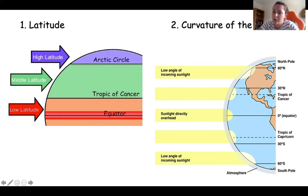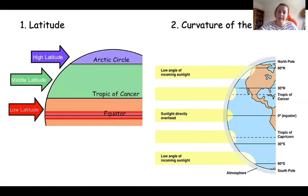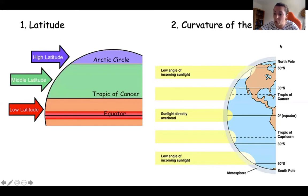Curvature of the Earth: the Earth is a sphere, so it's about how much sunlight different parts receive. At the equator, sunlight hits directly overhead all year round, making it very hot — the same applies at the tropics. At the North and South Poles, due to the tilt of the Earth, there are roughly six months of darkness and six months of sunlight, so they receive much less sun and are much colder.